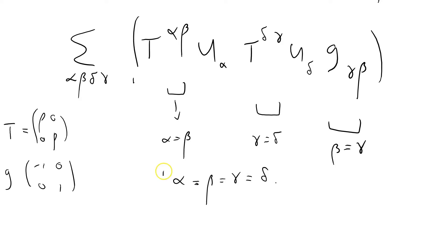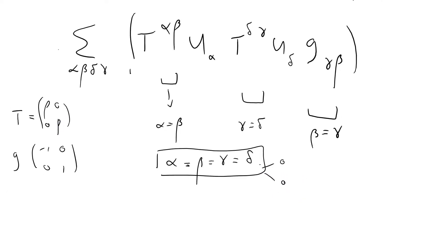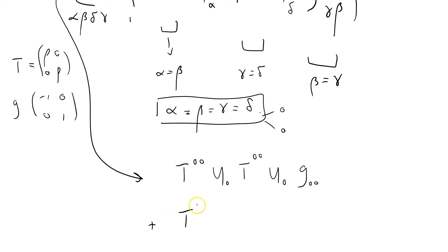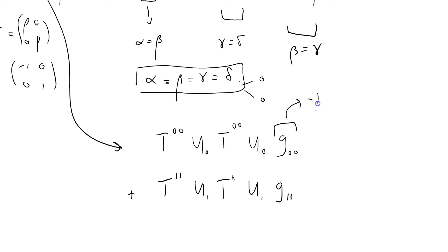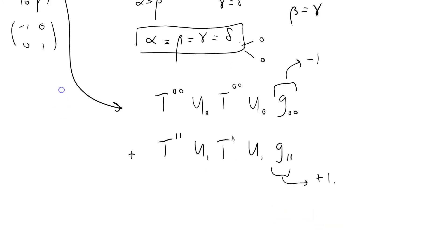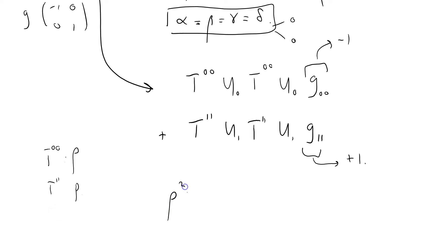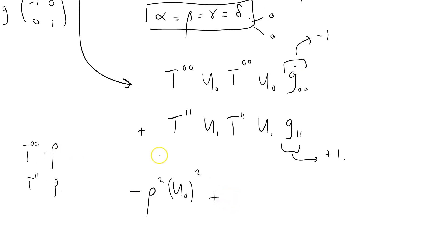There we go. So we know that all four indices are equal, but we don't know the value. Because we're summing over the zero and one terms, this expression becomes: T_{00} U^0 T_{00} U^0 G_{00} plus T_{11} U^1 T_{11} U^1 G_{11}. We know G_{00} is minus 1 and G_{11} is plus 1. We know T_{00} is ρ and T_{11} is P. So this term is minus ρ² (U^0)² plus P² (U^1)².